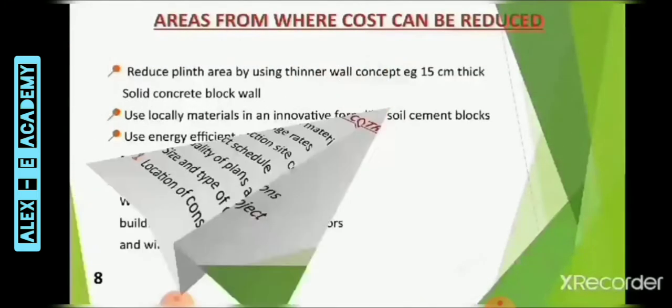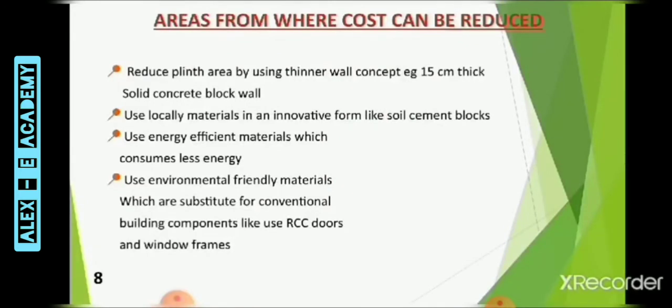Next is areas from where cost can be reduced. We can reduce the cost by reducing the plinth area using the thinner wall concept. Usage of locally available material is also helpful to reduce the cost. Next is usage of energy-efficient and cost-efficient materials. For example, mud or cement blocks which use lesser energy, and usage of environmentally friendly materials like RCC doors, window frames, etc.